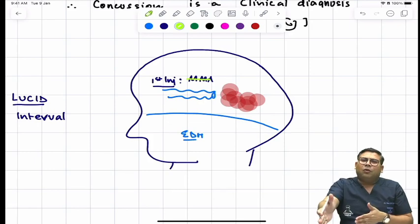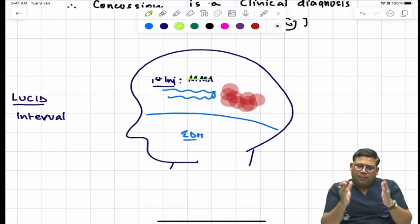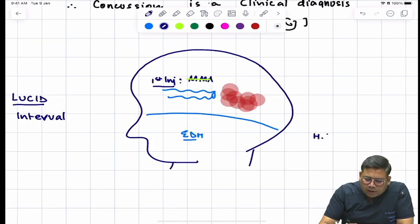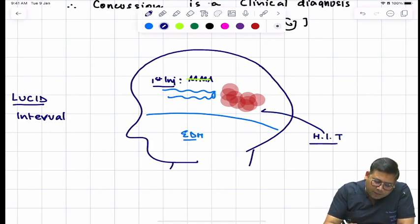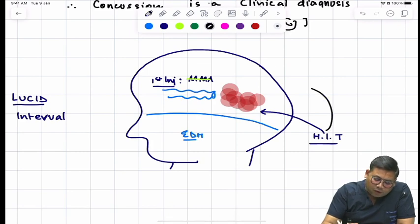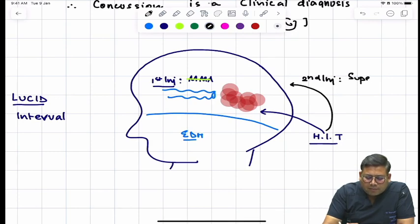Then why do we initially get loss of consciousness? Because this hematoma is not going to cause it. The answer is EDH is mostly associated with high impact trauma. So because of this high impact trauma, the first injury that you have is rupture of middle meningeal artery. And since this is high impact trauma, you have a second injury also, and what is the second injury? That is nothing but superimposed state of concussion.